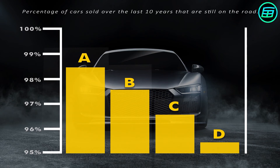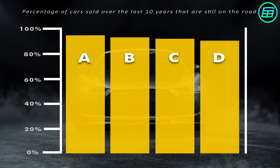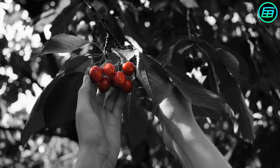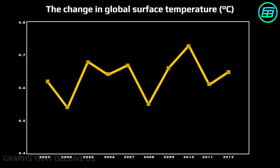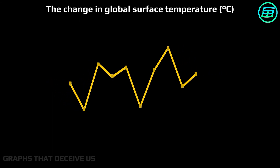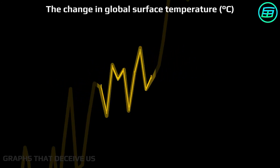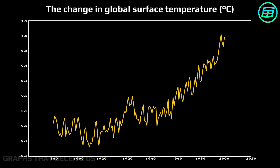If we start the graph at 0, we get a different picture. As you can see, in reality there's no significant advantage. Another way of using graphs to deceive is called cherry picking. For example, this graph shows the global surface temperature between 2003 and 2012, making it seem as if there isn't a significant global warming threat. But what we're being shown is just a small, carefully selected part of a bigger graph. If we examine the bigger graph, the surface temperature is seen to have increased significantly. There are many ways to manipulate graphs without changing any numbers, so we need to be careful when examining them.